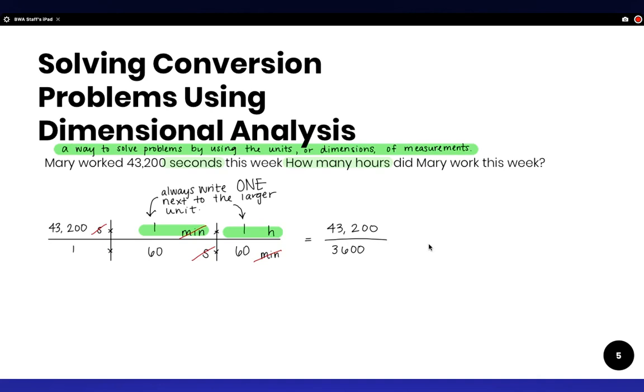And then you divide your final answer from the top of the table by your final answer on the bottom of the table, and the answer is 12.